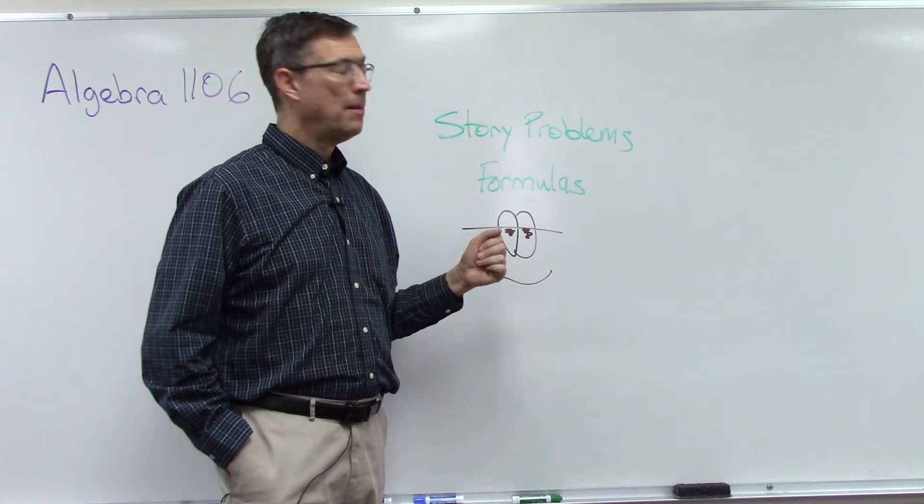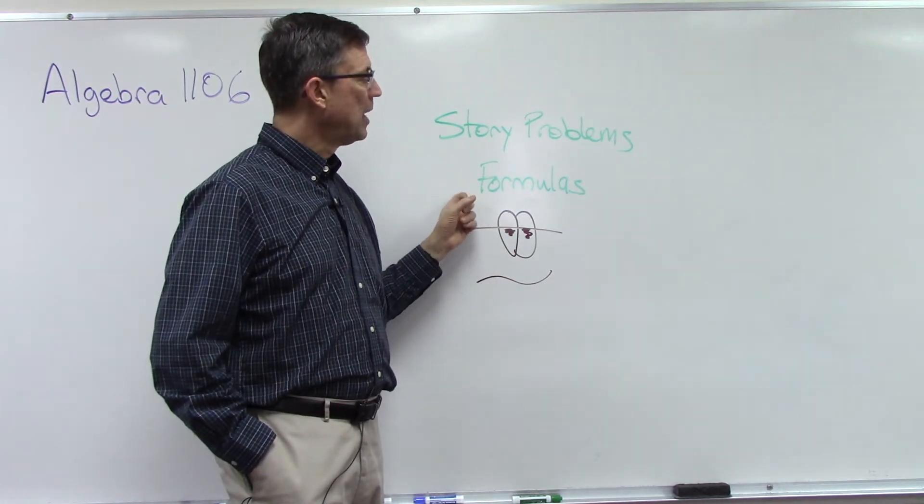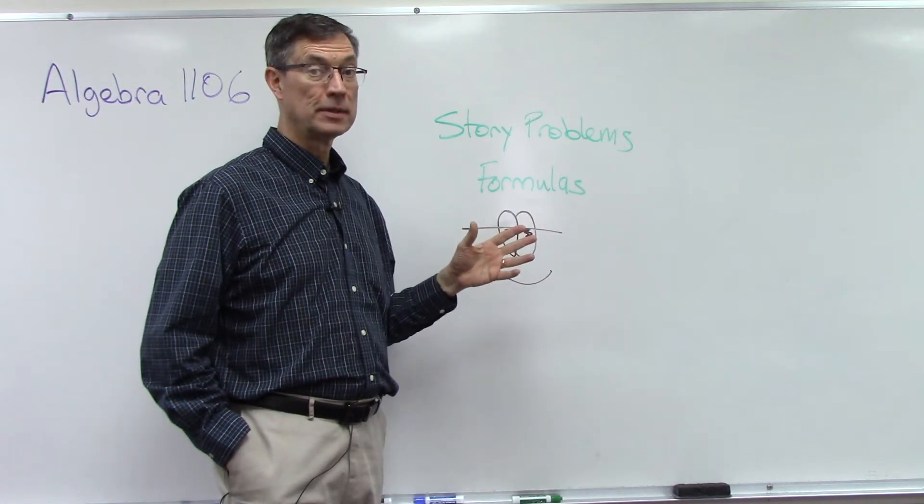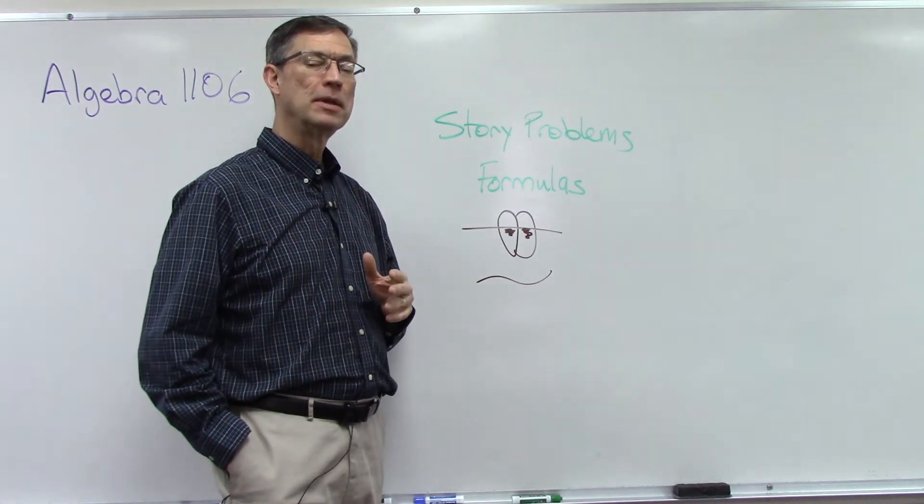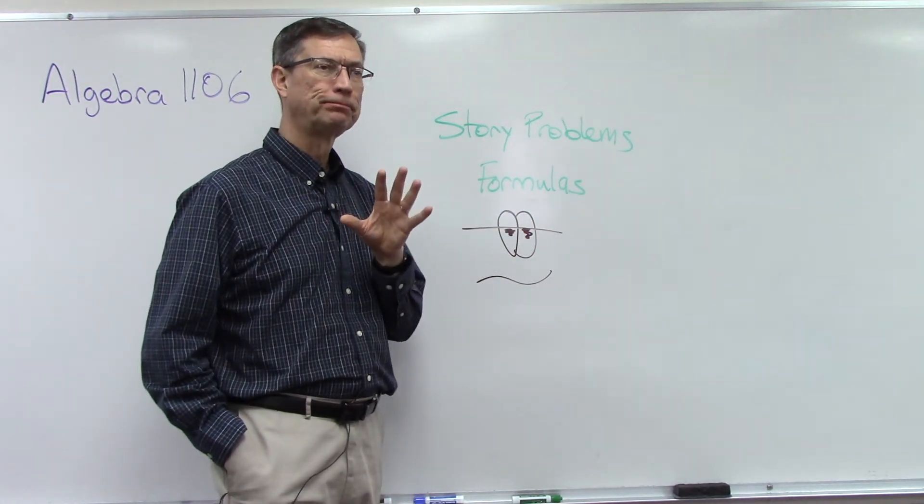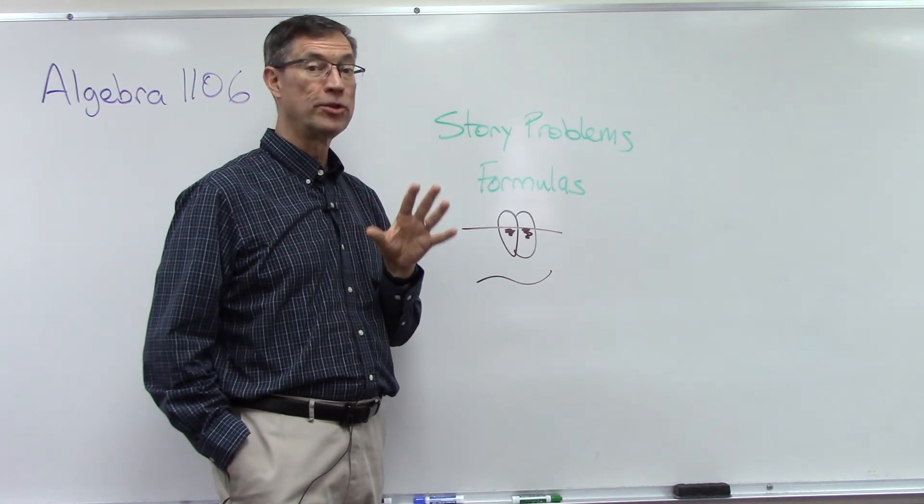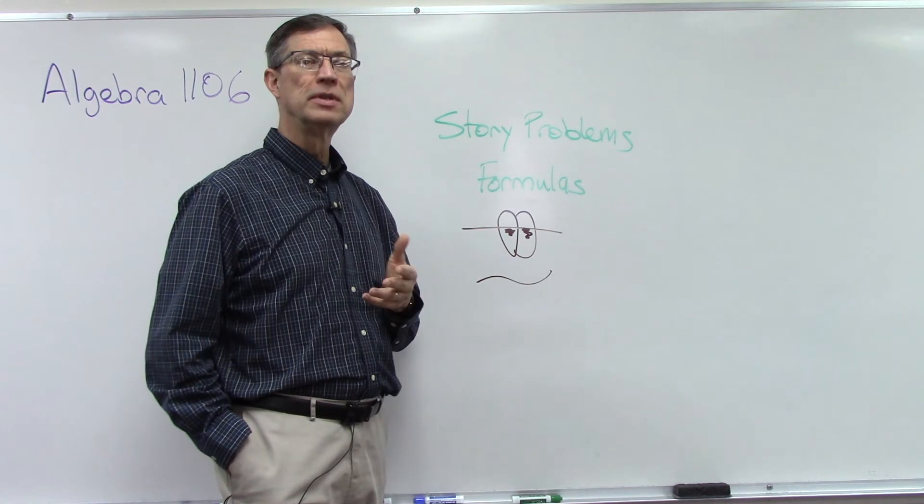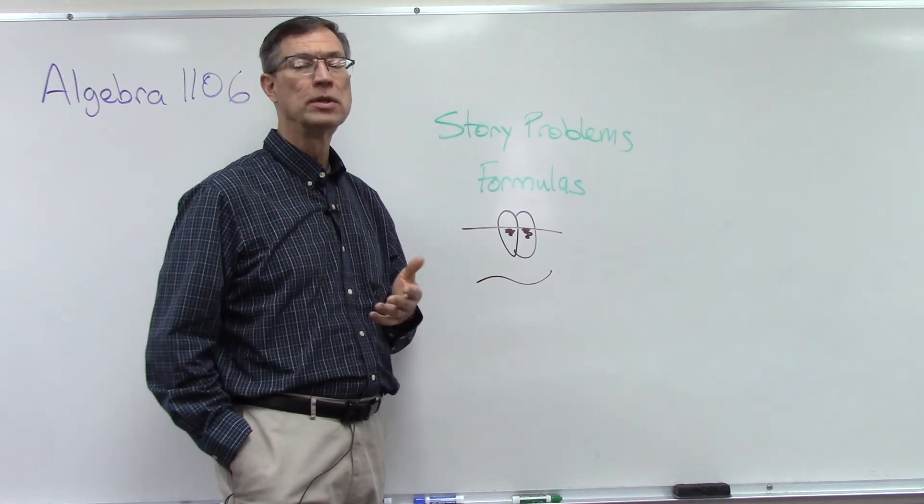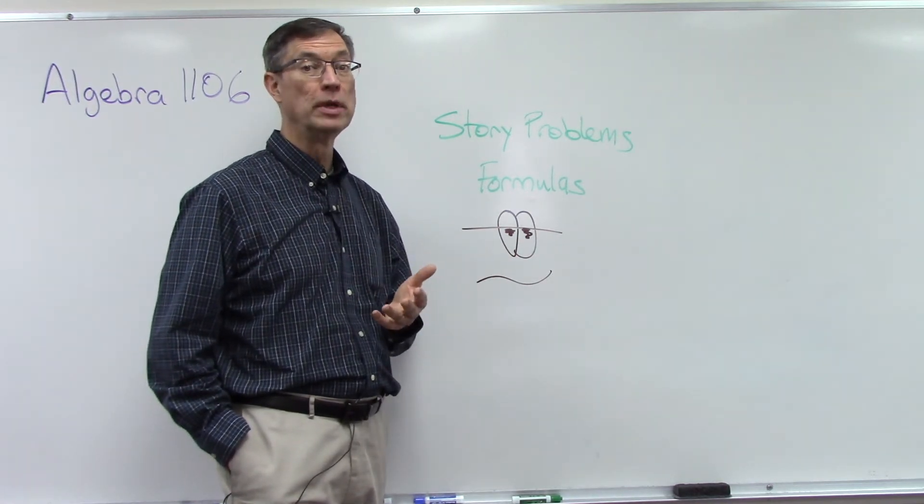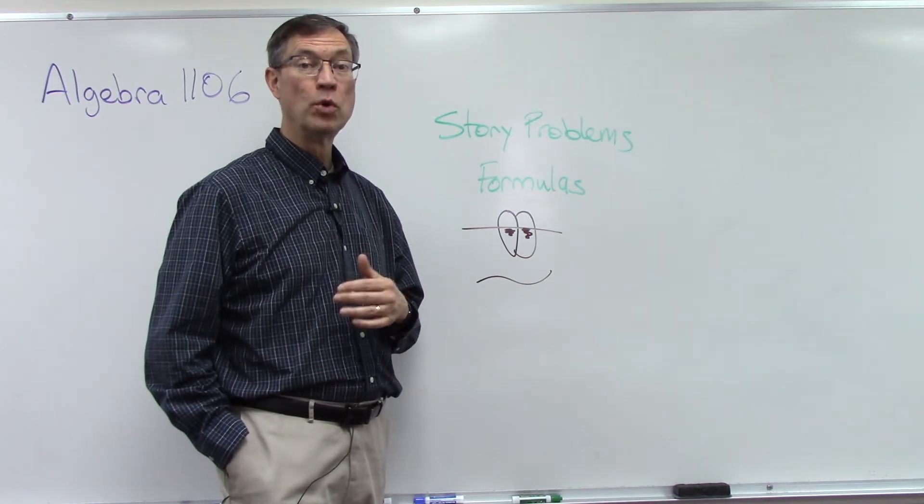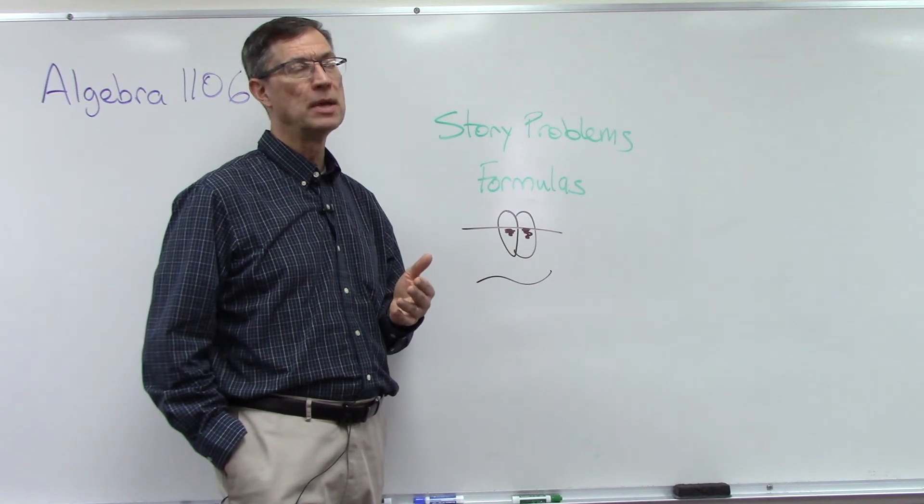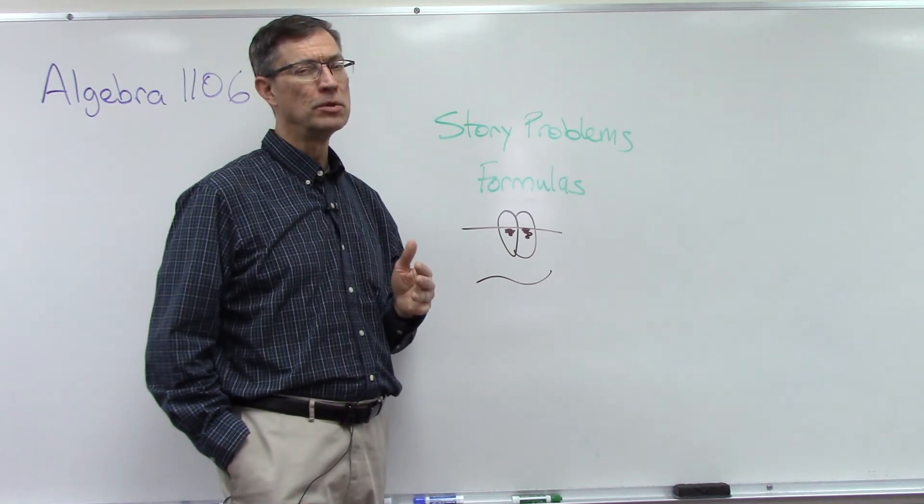As you're looking at these problems that involve percents, the pace always just gives it to you as a percent like 30% or 25%. Don't forget to always convert those to decimals, so 0.25 or 0.3. If it's 5%, remember it would be 0.05 as the percent. So you have to convert those into decimals before you can solve the problem.